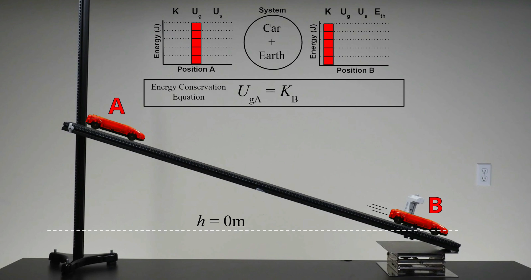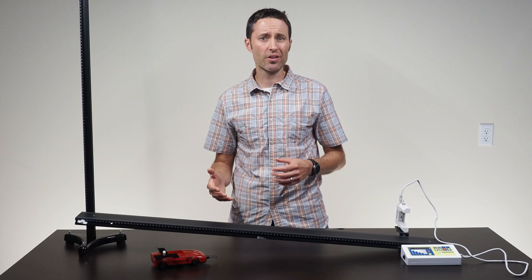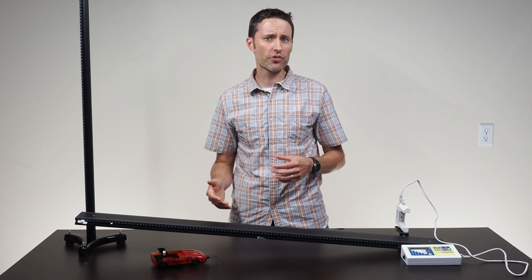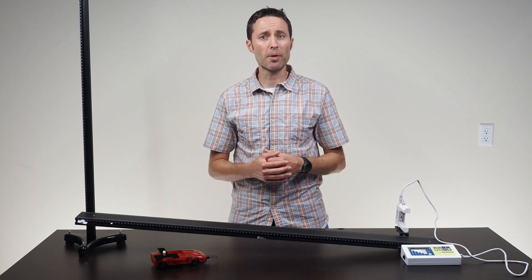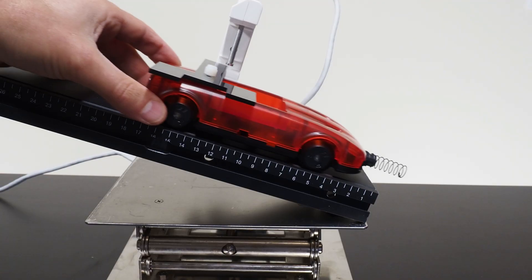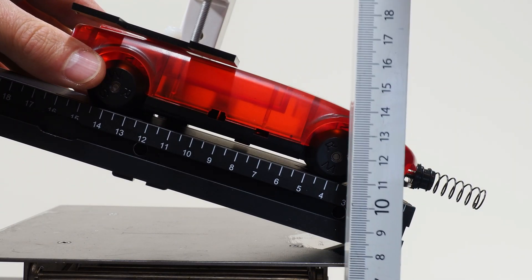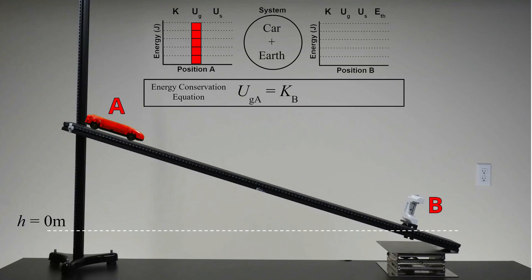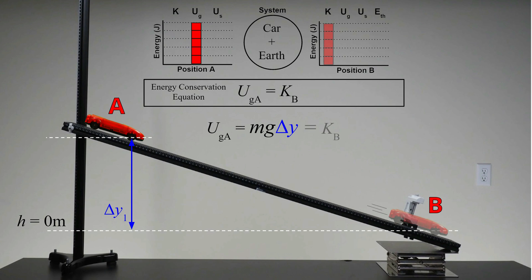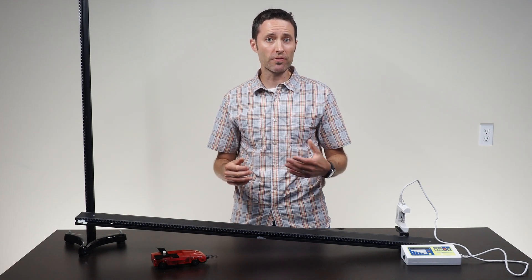This means that when students use the gravitational potential energy equation, they will have to use the car's change in height from the defined height of zero, rather than just the car's height from the table's surface. It is also helpful to have students measure the car's height from the same point each time — students find it easiest to measure using one of the car's axles. Students will use the measured change in height to calculate the initial gravitational potential energy. The car's kinetic energy when moving through the photogate will be equal to this calculated gravitational potential energy, and the car's velocity is found using the timer and photogate.